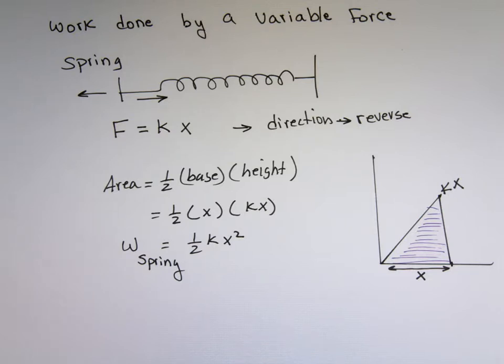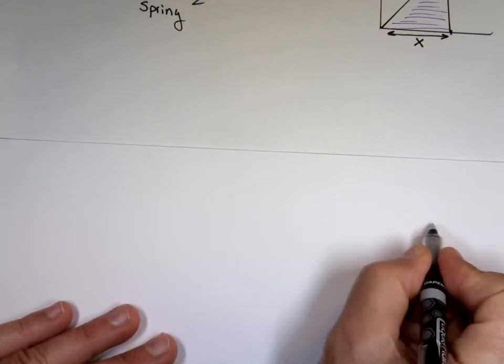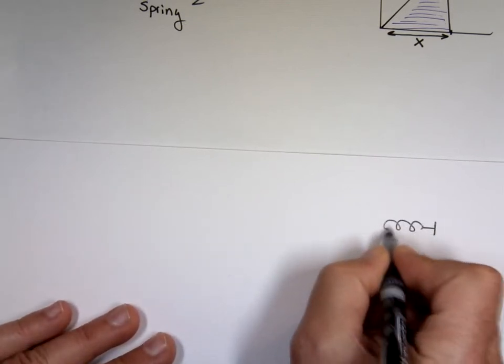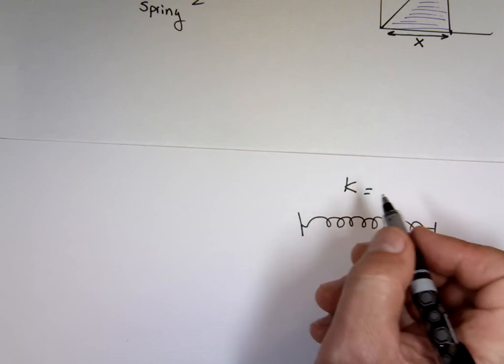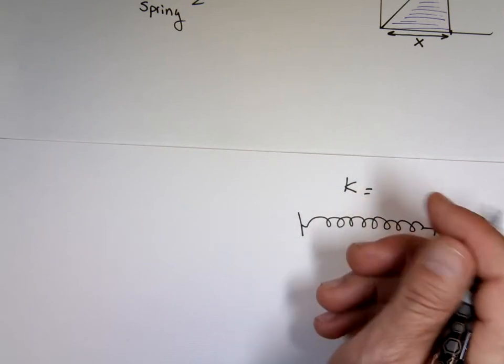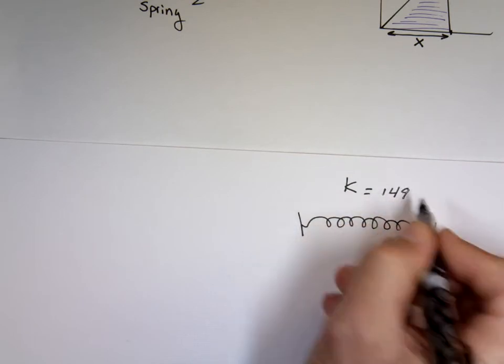So the work done by a spring is calculated by going as one half k times x squared. That's how much energy in that spring there. So when you compress a spring two centimeters, we know what k is. It will tell you how much energy in it. The spring we did in the lab yesterday, we calculated k. Does anyone remember what k for it? 149. Okay, 149. K for the spring there.